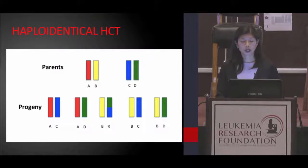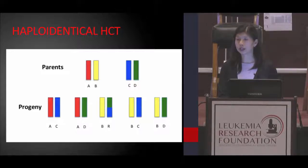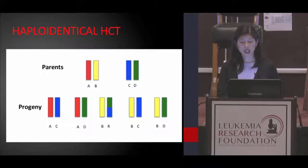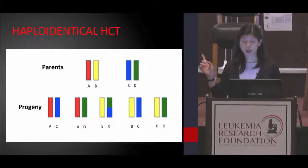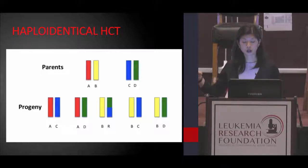Including in the next approach, which is using haploidentical donors. Haploidentical donors are defined as half-matched or half-mismatched donors. They are typically a first-degree relative — either a parent, a sibling, or a child. Parents each inherit one haplotype from their parents and then pass one along to their children. So a child is half-matched with each of their parents as well as most of their siblings, and will be half-matched to probably all of their children as well.